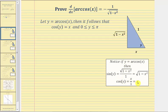So we know cosine y equals x. We also know that sine y equals the ratio of the opposite side to the hypotenuse, which simplifies to the square root of the quantity one minus x squared. We should recognize that if the angle y is in the first quadrant, cosine y will be positive and x will be positive.